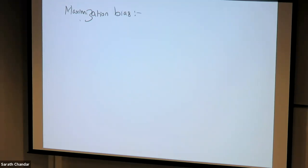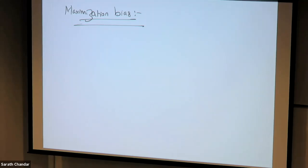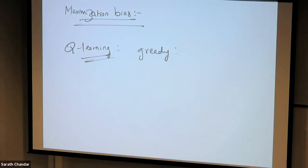First, what we are going to talk about is the problem of maximization bias. All the control algorithms we have seen so far, like TD and Monte Carlo, in some sense they all involve some max equation somewhere. For example, in the case of Q-Learning, you have a target policy which is basically greedy, which means you are taking a max over your estimated Q values.